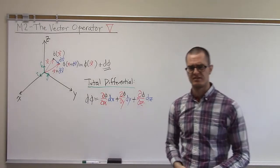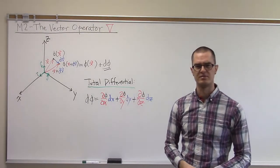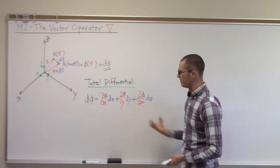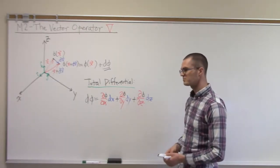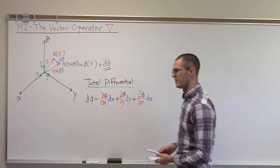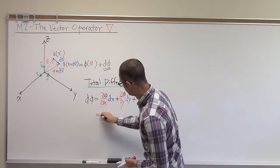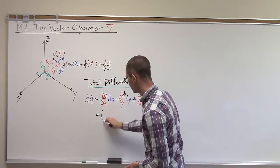To make sense of that expression in a vector calculus framework, we can extract the vector components of this expression. So what we have here is essentially a dot product between two vectors.